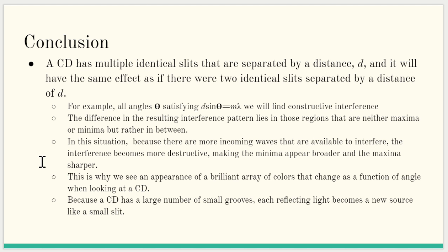In this situation, because there are more incoming waves that are available to interfere, the interference becomes more destructive, making the minima appear broader and the maxima sharper. This is why we see an appearance of a brilliant array of colors that change as a function of angle when looking at a CD. Because a CD has a large number of small grooves, each reflecting light becomes a new source, like a small slit.